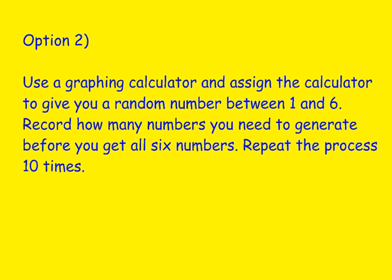Option number two: we could use a graphing calculator. Graphing calculators have a random number generator — assign the calculator to give you a random number between one and six. We need to record how many numbers we generate before we get all six numbers, keeping track of that somehow, and then repeat the whole process ten different times. This is just an alternative to using dice; it works really the same way. We just have to keep track of how many times we press the generator until we get all six numbers.